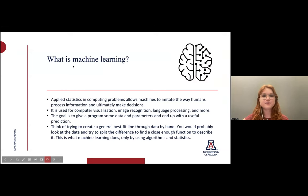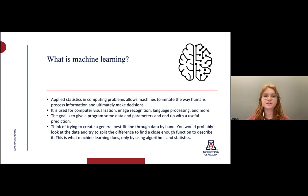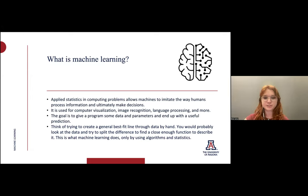So what is machine learning? It seems like you hear about it every day in the news, but what is it at its core? It's actually just applied statistics and computing. It allows machines to imitate the way we as humans process information and make decisions. It's used for computer vision, image recognition, language processing, and more. Our ultimate goal is just to give some data and parameters to our program and end up with a useful prediction.